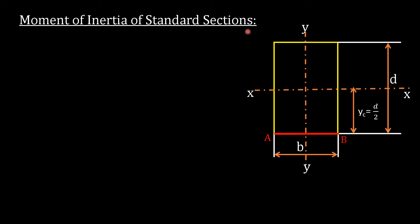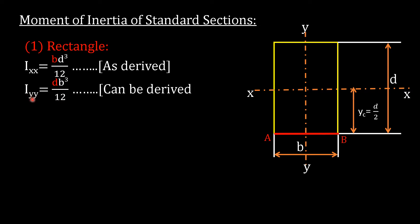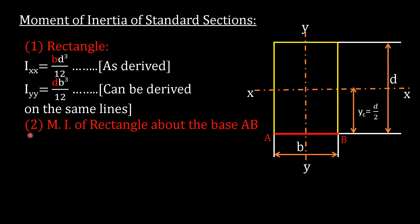Now we will discuss moment of inertia of standard sections. First, rectangle: we have already derived that the moment of inertia of a rectangle about horizontal axis XX is bd³/12. The moment of inertia about the vertical axis YY is db³/12, which can be derived on the same lines as I_XX. Number two: moment of inertia of rectangle about the base AB.